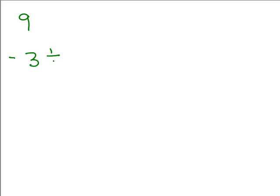Here's one for you to try: 9 minus 3 and 1 eighth. Try any method you want and see if you can get the right answer. One way of reasoning it out: what do I have to add to 1 eighth to get 1? I'd need 7 eighths more. That adds up to 1, plus 3 more is 4, plus 5 more gives you 9. So the answer is 5 and 7 eighths.